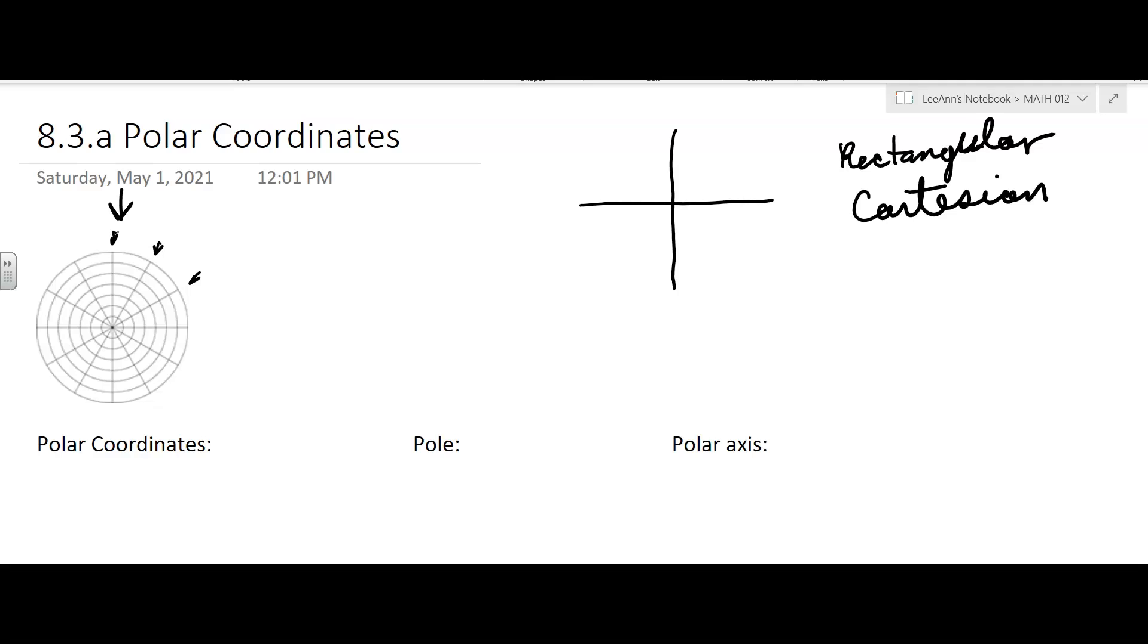Polar coordinates come in (r, θ), where r is a radius and θ is an angle. They usually put these in radians for the angle. I guess they could do degrees, but I don't usually see that.